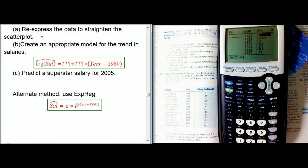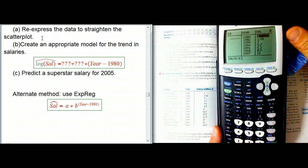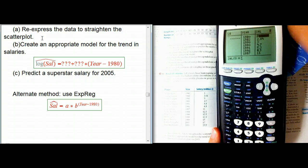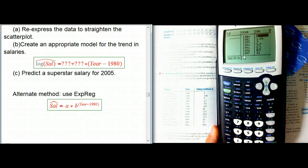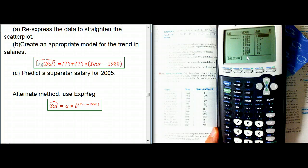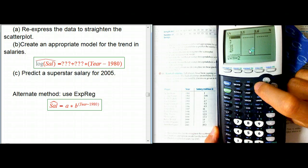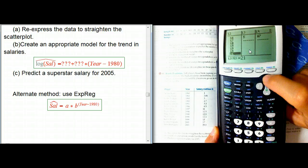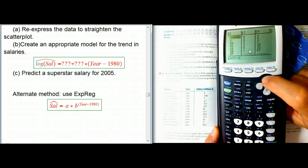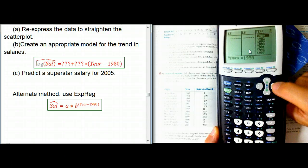They ask to re-express the data to straighten the scatterplot. We should make the scatterplot first and see if it needs straightening. I've entered the years and salaries into two lists. These are really bad numbers to use, 1980 through 2001, because if you start doing linear fitting, you're multiplying by the slope with really large numbers. So I'm going to do a simple re-expression, just a shift. In L2, I subtracted 1980, so it goes from 0 to 21. I'm going to use L2, which is the year minus 1980, and this simple re-expression will help with accuracy.